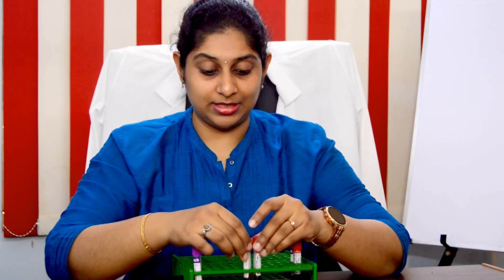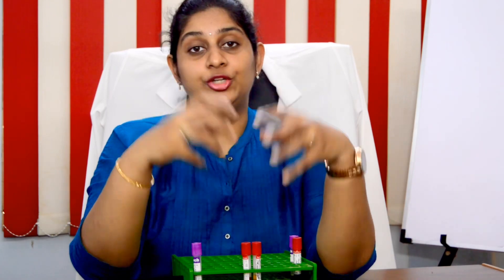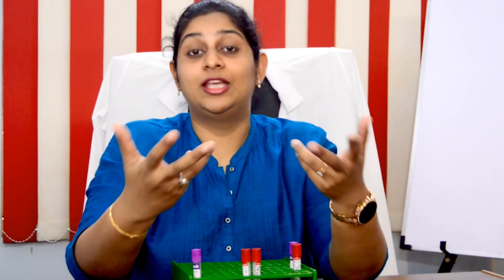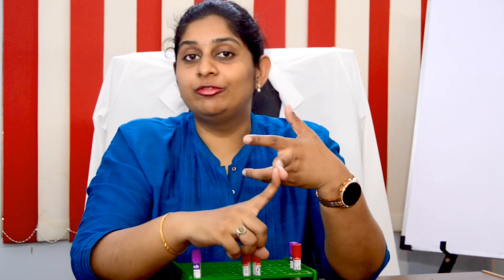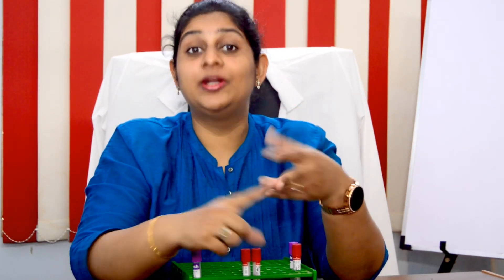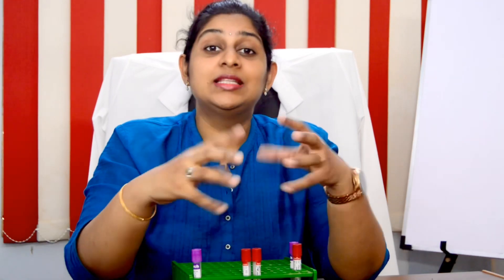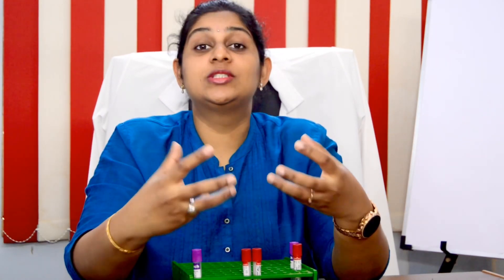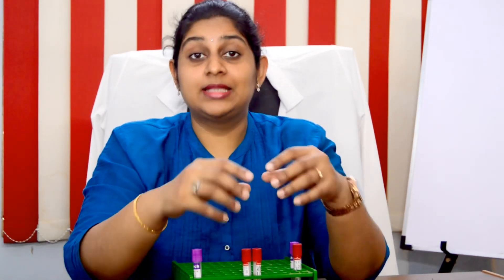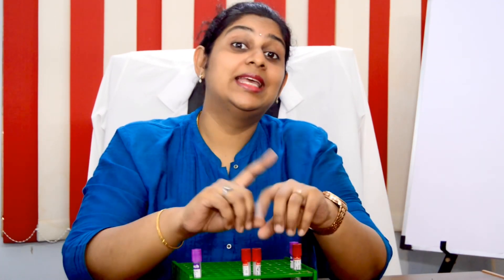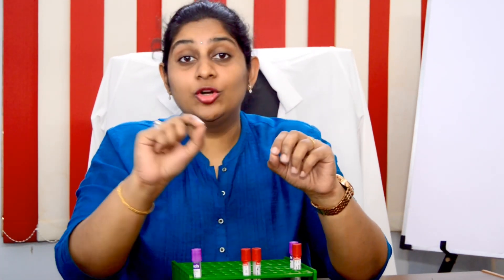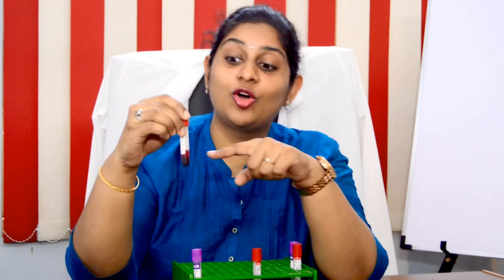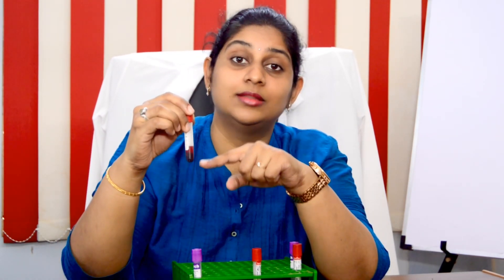Due to some mistakes during phlebotomy or while processing your sample — these are the only two ways you get hemolysis. One is during collection of the sample and the other is during processing. Due to some negligible mistakes the RBCs break down and release hemoglobin, and that released hemoglobin is the cause of the red color in the sample.